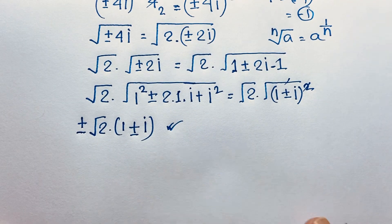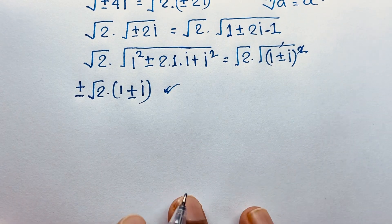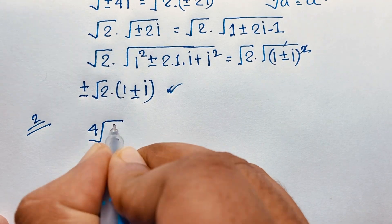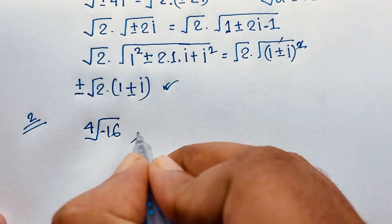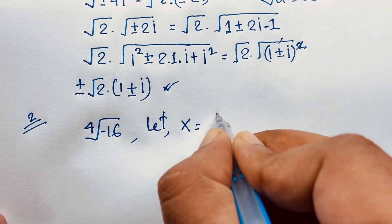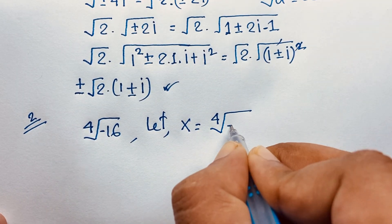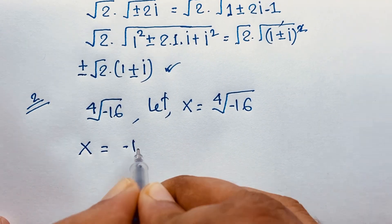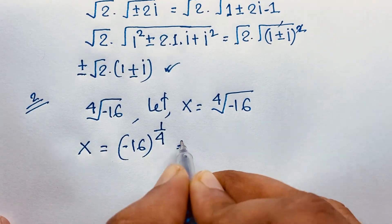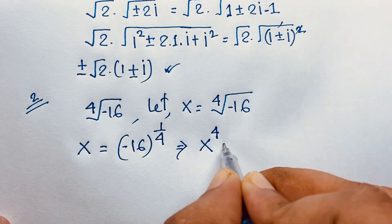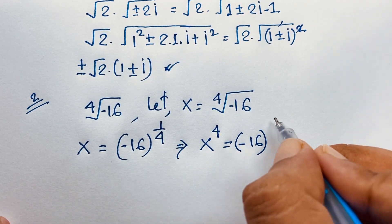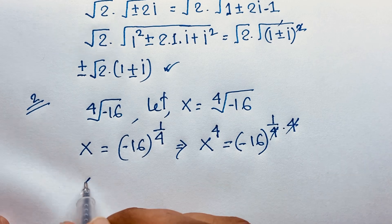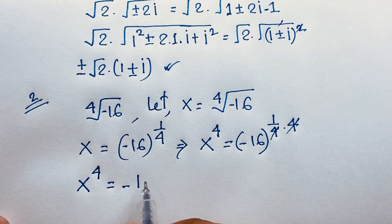So this is plus or minus — there are 4 values. Now I solve this question by the second method. Our question is 4th root of minus 16. Let x equal 4th root of minus 16. Then x equals minus 16 to the power 1 over 4. I use exponent 4 on both sides: the 1 over 4 times 4 cancels, giving x to the power 4 equals minus 16.